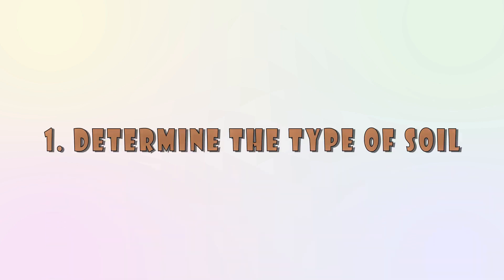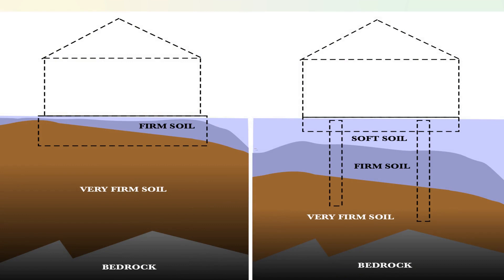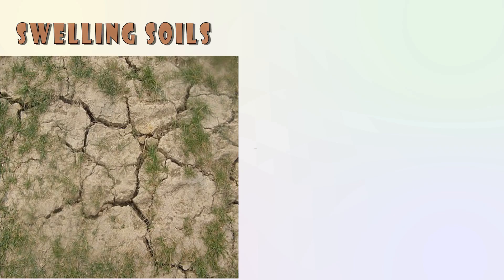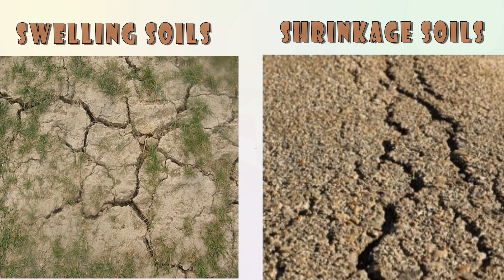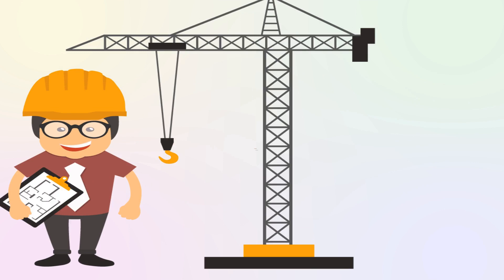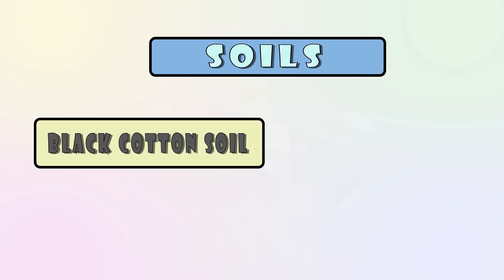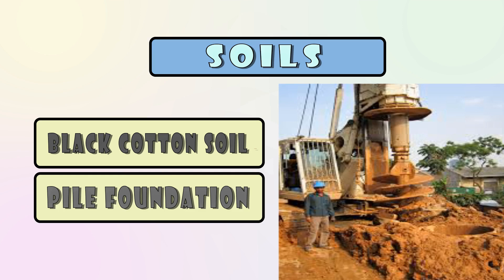The first step is to Determine the Soil Type. We need to know where the house is already located and what type of soil is there. There are different types of soils — some are swelling type soils that swell under pressure, and some are shrinkage type soils which affect the structure quite a lot. For example, there is black cotton soil. If you try to penetrate anything into black cotton soil, it will easily go in. To maintain the stability of your foundation, you may need a specific type of pile foundation. You will need to do soil investigation to know the soil type.